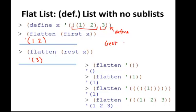Recall that the rest of x would be the list 3, not just the element 3. This should help us as we move forward and write this flatten function.